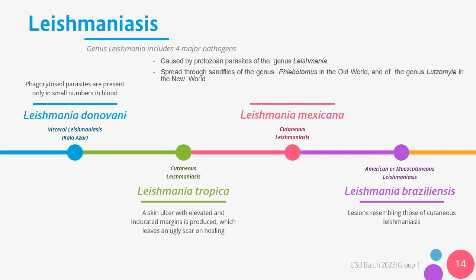The genus Leishmania includes four major pathogens. Leishmania donovani causes visceral Leishmaniasis, also called Kala-azar, where phagocytosed parasites are seen in small numbers in blood. Leishmania tropica causes cutaneous Leishmaniasis and presents with a skin ulcer with elevated and indurated margins, leaving an ugly scar as it heals. Leishmania mexicana also causes cutaneous Leishmaniasis. Lastly, Leishmania braziliensis causes American or mucocutaneous Leishmaniasis and presents with lesions that resemble cutaneous Leishmaniasis.